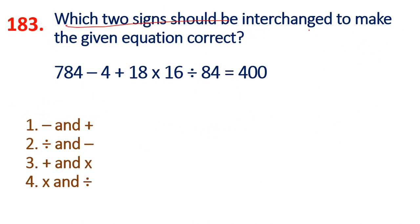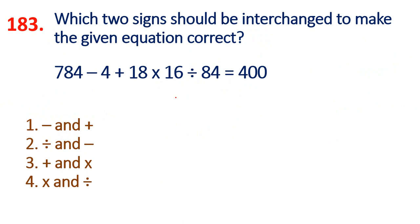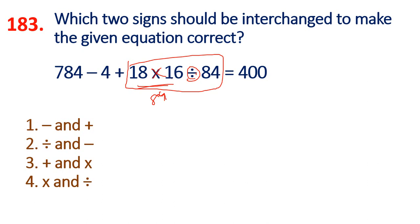Which two signs should be interchanged to make the given equation correct? You have to choose between division and multiplication. The multiplication and division gives 84. So 84 is cancelled — 21 times, 4 times, 7 times, 6 times. It is not cancelled. It is 7.